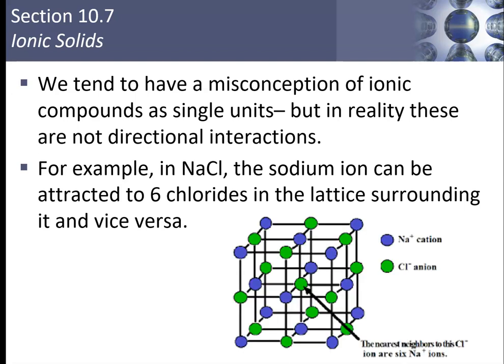In reality, these are not directional interactions. One sodium isn't attracted to just one chloride ion. In sodium chloride, the sodium ion can be attracted to six chlorides surrounding it, or vice versa. If you look at this image with the chloride ion in the center, you can see there is a sodium ion in each of the cardinal north, south, east, west directions, plus one above and one below — all near neighbors attracting that chloride.